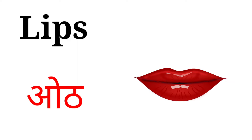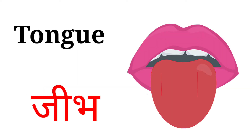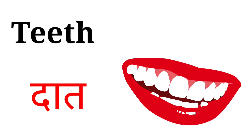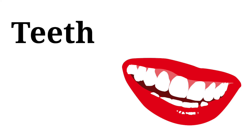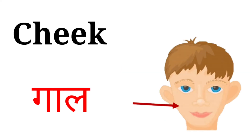Lips, lips means oot. Tongue, tongue means jib. Teeth, teeth means daat. Cheek, cheek means gal.